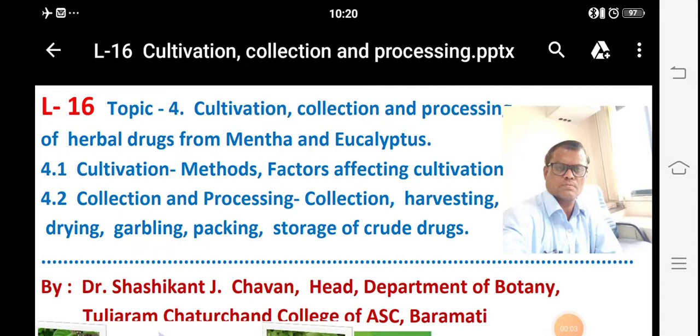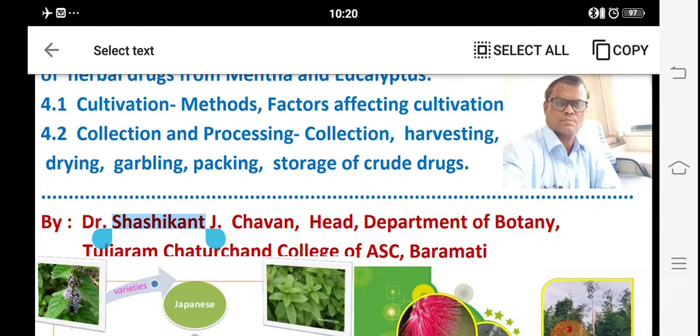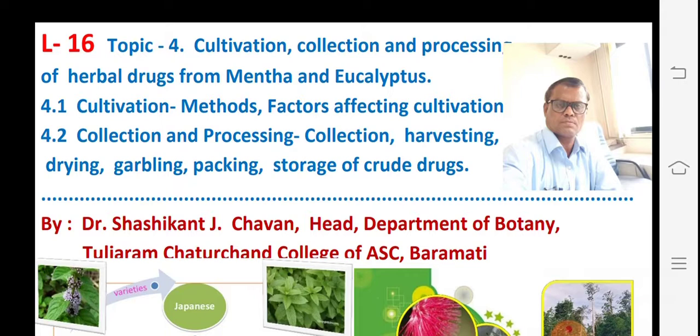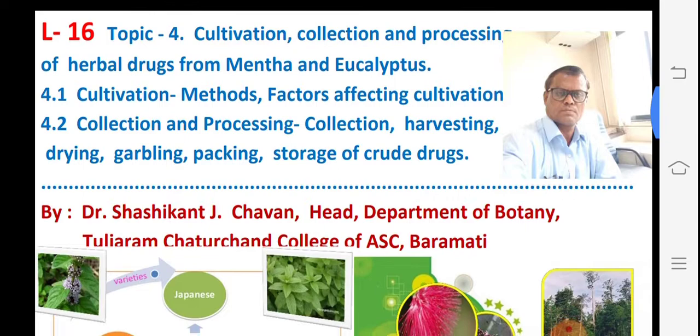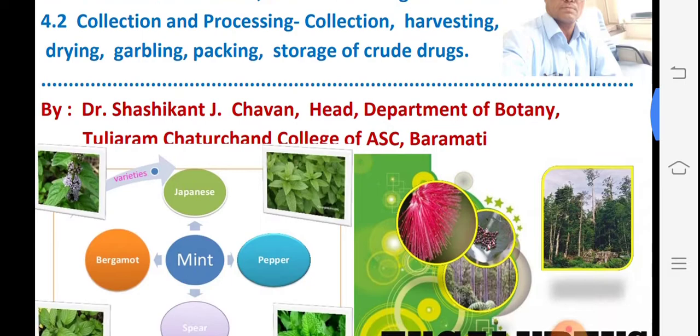Good morning. We are starting our fourth topic based on the cultivation, collection, and processing of herbal drugs — from mentha and eucalyptus. There are also points on different cultivation methods, factors affecting cultivation, collection, processing, harvesting, drying, garbling, packaging, and storage of crude drugs. We will see these one by one.